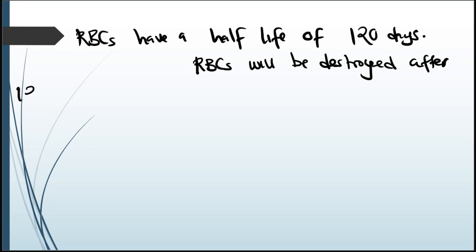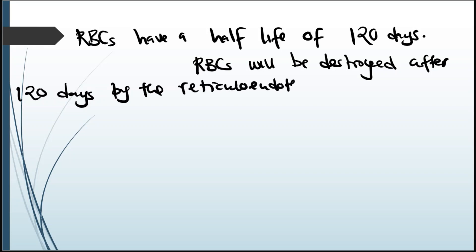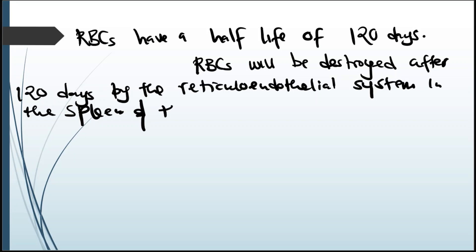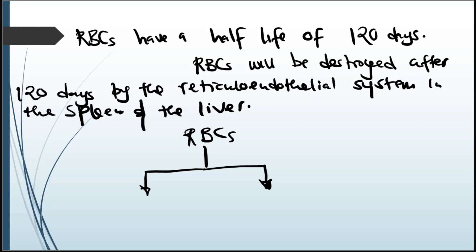After 120 days, red blood cells are destroyed by the reticuloendothelial system, which is found in the spleen and the liver. The red blood cell is destroyed because it becomes old and rigid — it's no longer flexible. When the red blood cell is destroyed, it is broken down into its two components, producing hemoglobin.